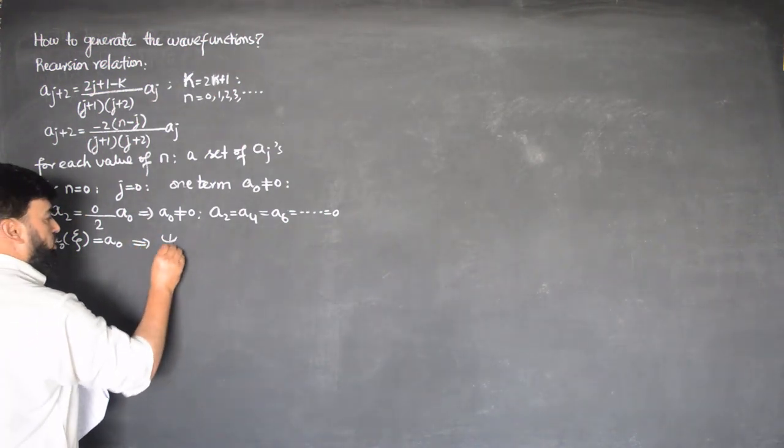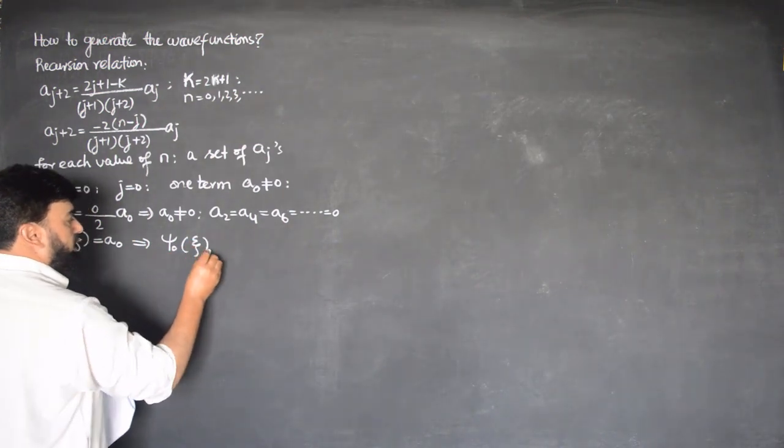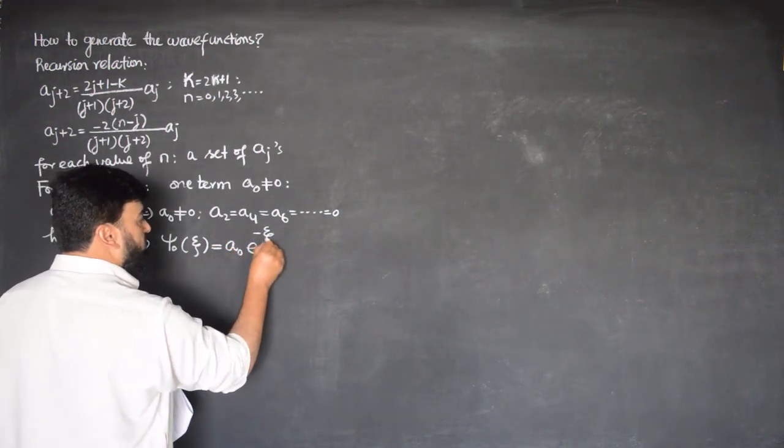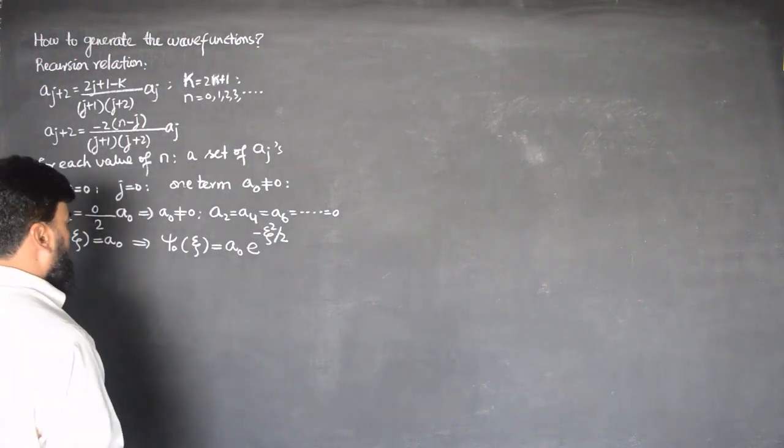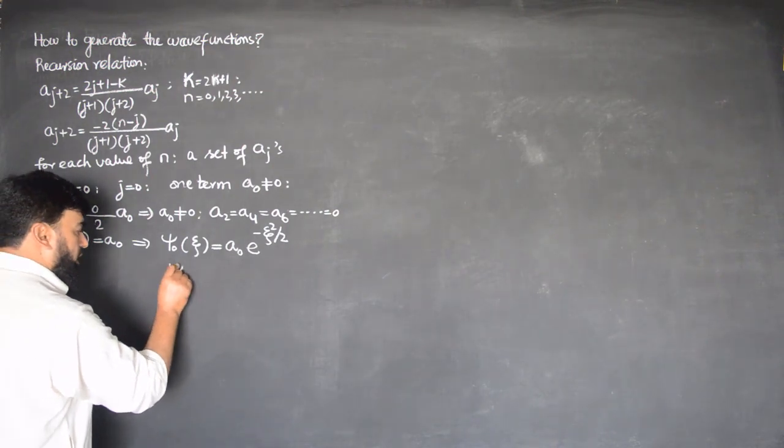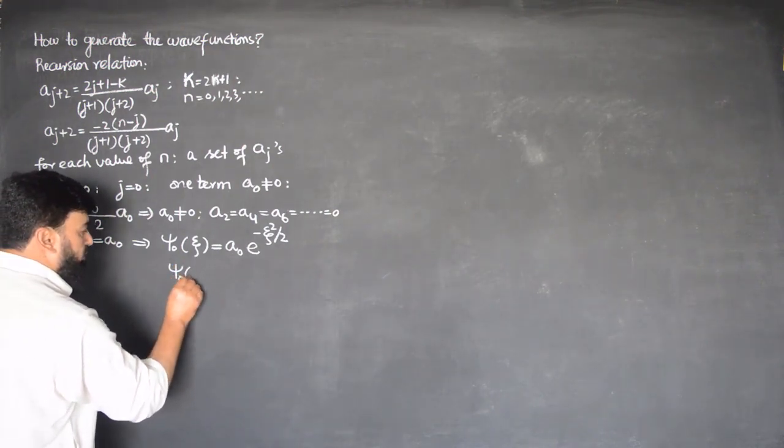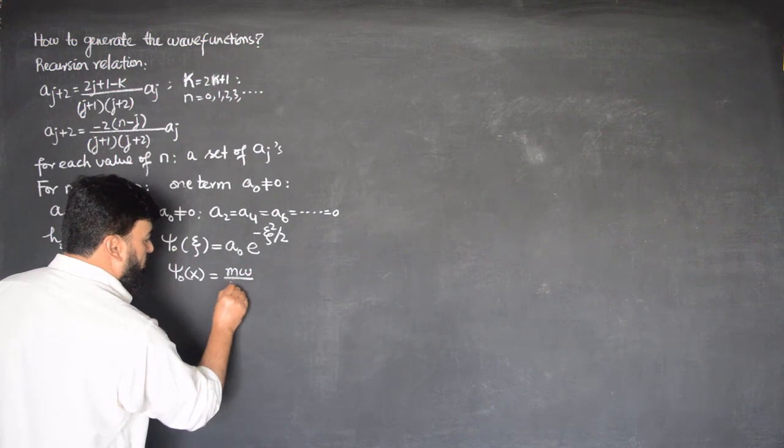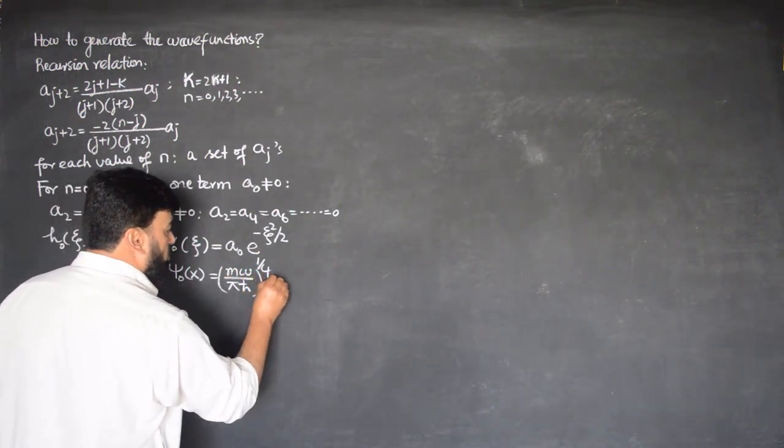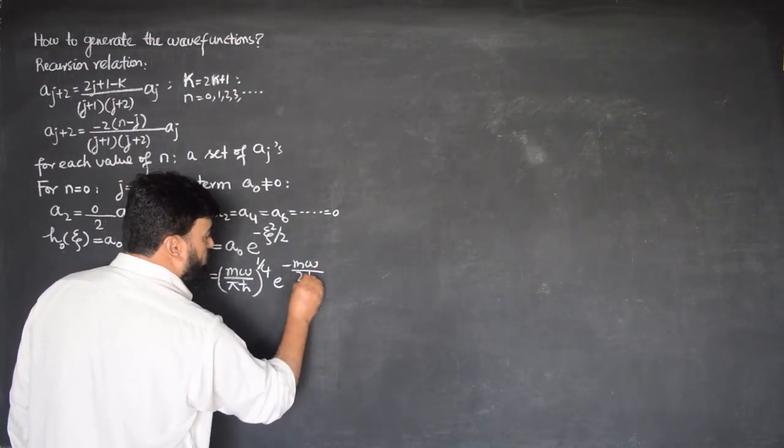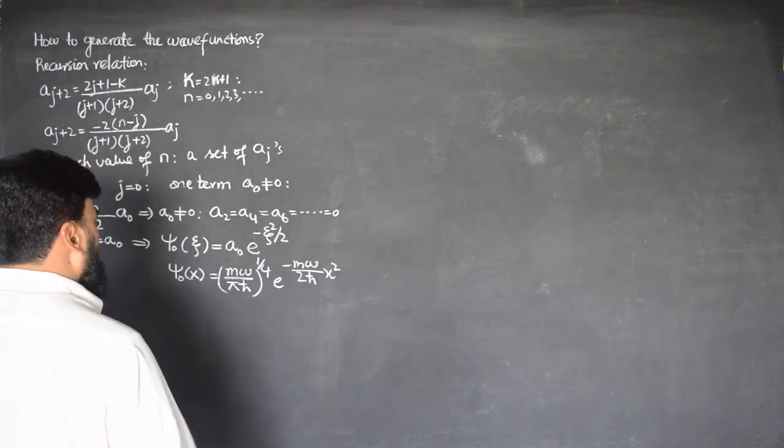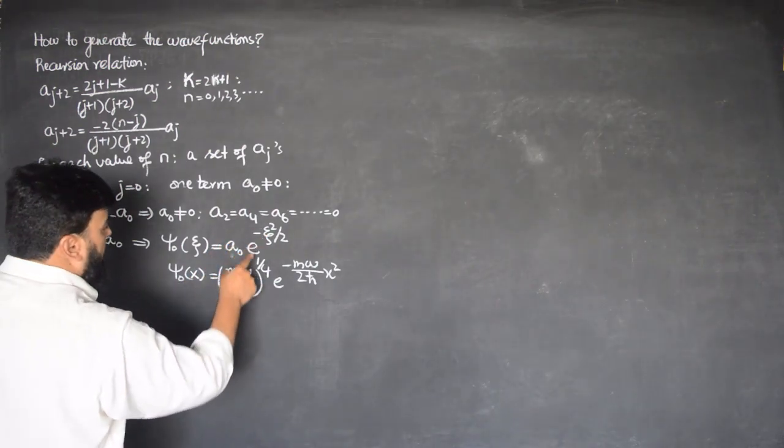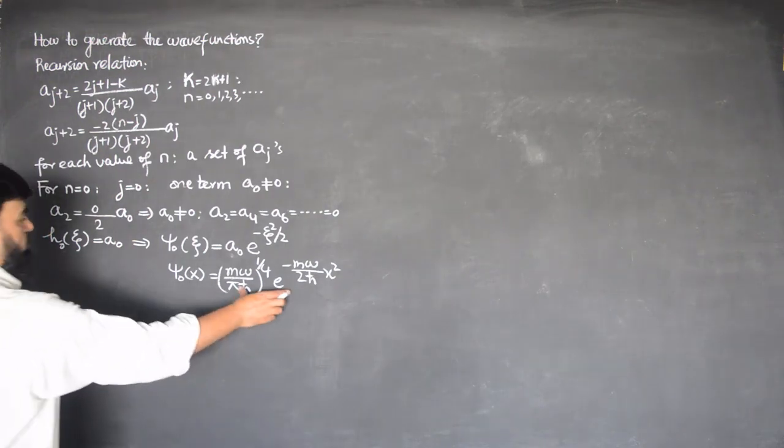So only one term survives. We can say that h of ξ, h_0 is equal to a_0, while rest of all the terms are equal to 0. We are having ψ_0 of ξ equals h_0 of ξ, so this is a_0 e to the power minus ξ squared over 2. This resembles our previous equation for wave function ψ_0 of x, in terms of x.